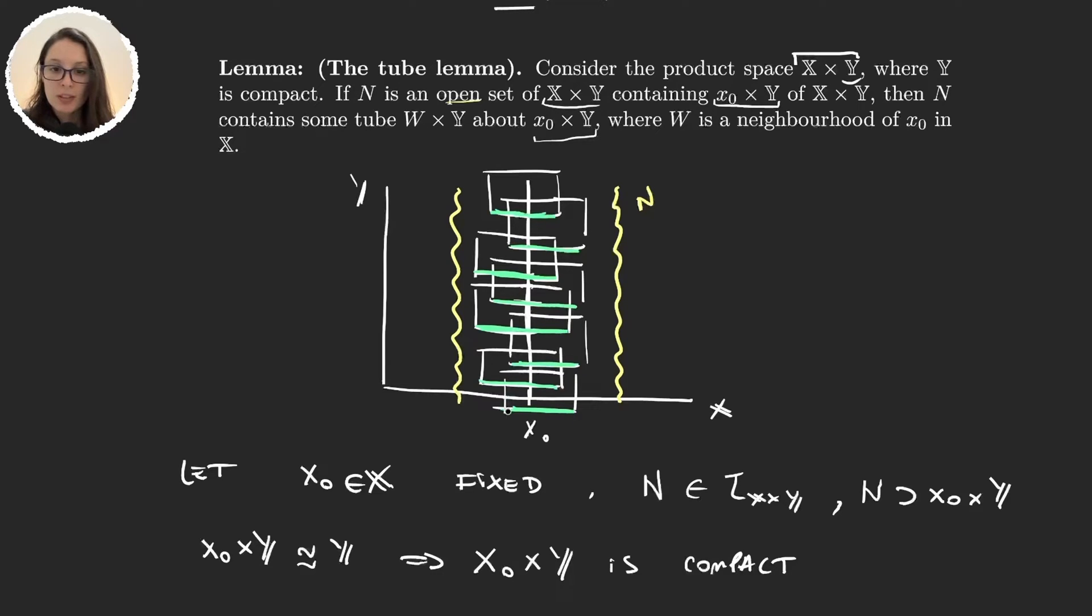and all the U sub i's contain x₀, so if I take the intersection, let's do all the projections so that we can take the intersection. Okay, my drawing can be a bit off,